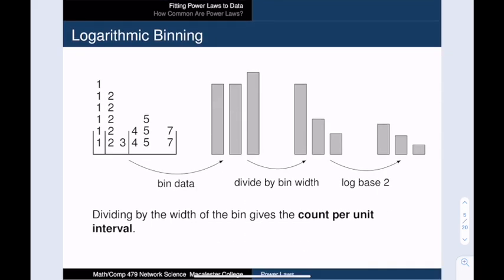Here is how logarithmic binning works. We split the data into bins. The size of these bins are increasing powers of two. So here we have a bin of size 1, and then a bin of size 2, and then a bin of size 4. Our next bins would have sizes 8, 16, 32, etc.